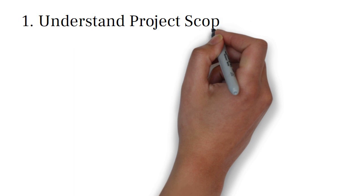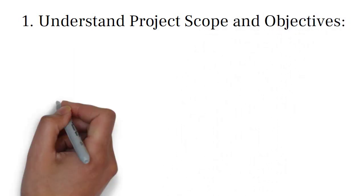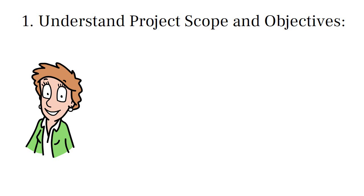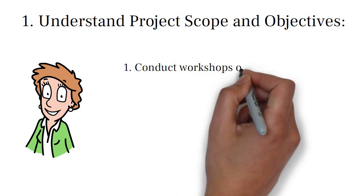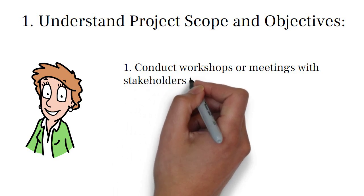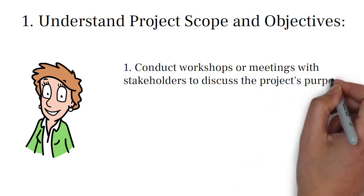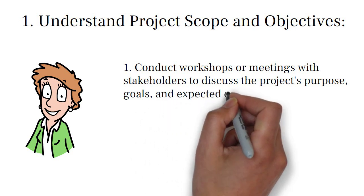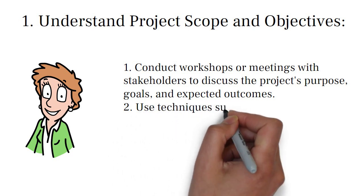The very first part is understanding the project scope and objectives. You have to clearly define the purpose and goal of the project, and also identify the key stakeholders and their expectations. To do that, you'll need to conduct workshops or meetings with these stakeholders to discuss the project's purpose, its goals, and its expected outcomes. You should also use techniques such as brainstorming, mind mapping, or SWOT analysis to explore various aspects of the project.